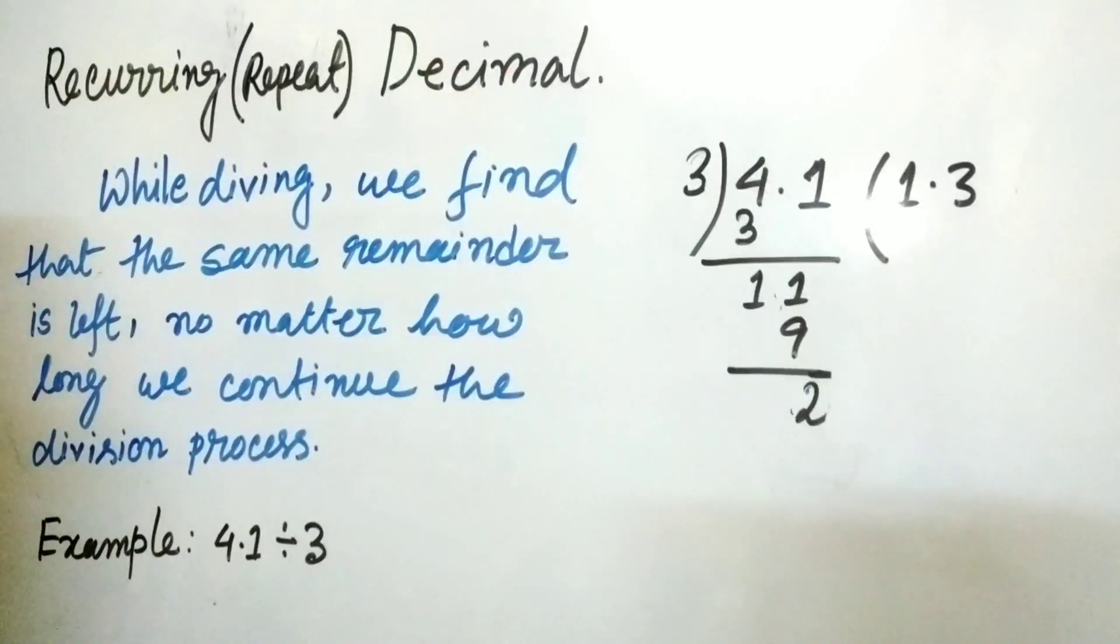Recurring or repeating decimal: While dividing, sometimes we find that the same remainder is left no matter how long we continue the division process. For example, let's go for 4.1 divided by 3. If we find the division of 4.1 by 3, 2 is remainder here.